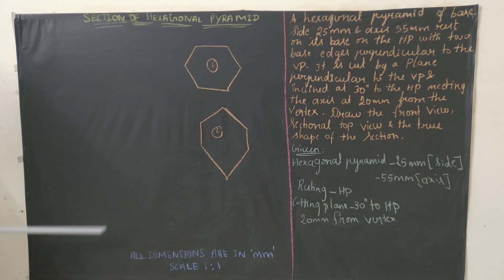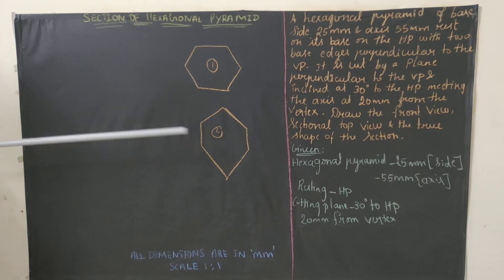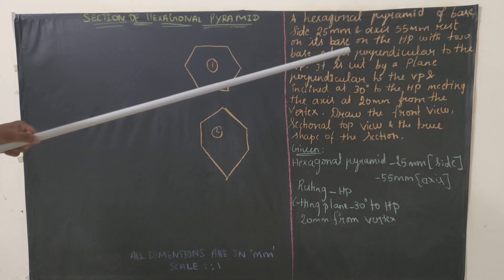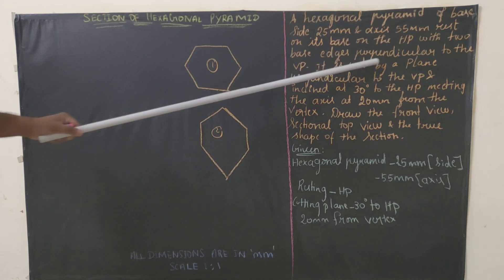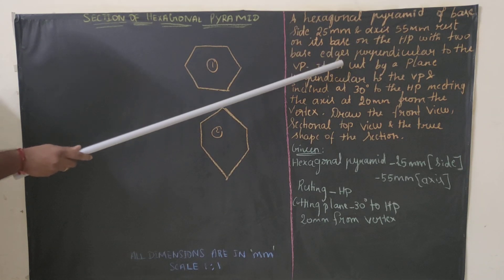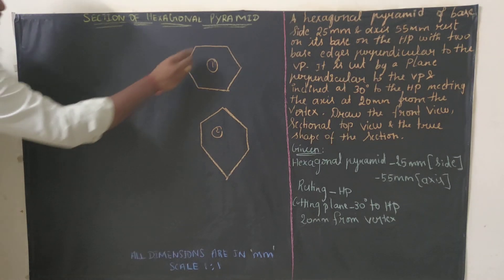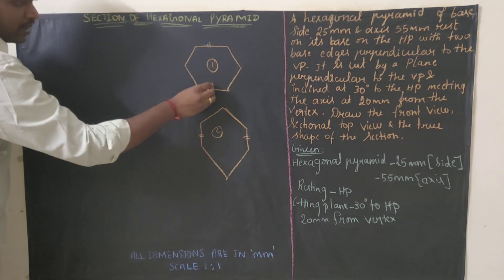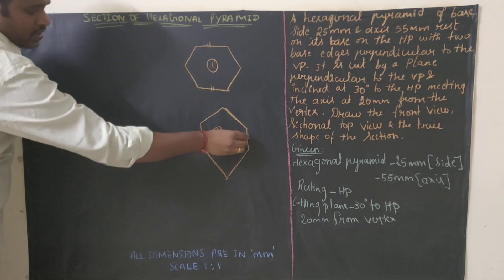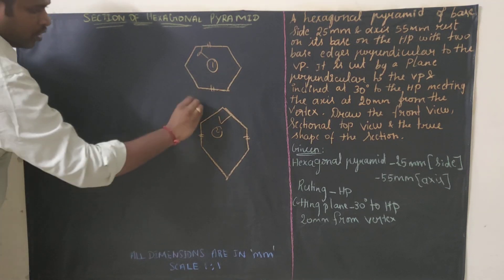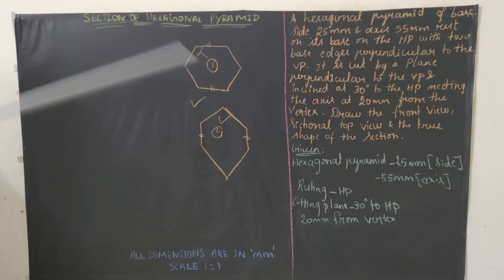The base diagram in HP is the hexagon — either the first or second orientation. The condition is two base edges perpendicular to VP. These base edges are parallel to VP in the first type, but only two base edges are perpendicular to VP in the second type, so we will go with the second type of hexagon diagram.